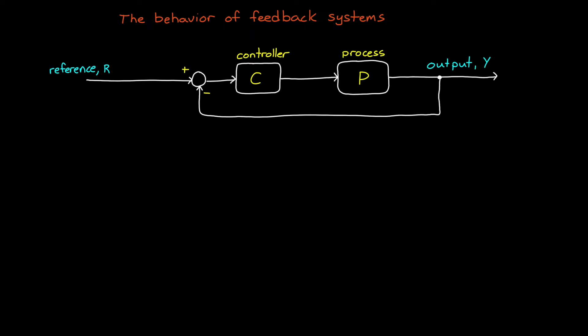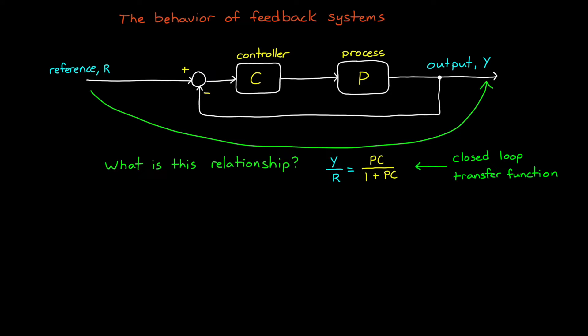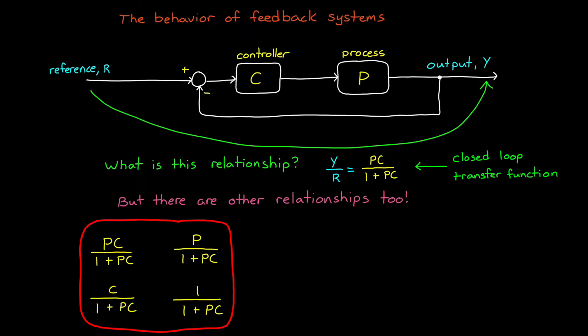When we talk about feedback systems, we can get caught up thinking solely about the relationship between the reference signal and the output. How well is the system going to follow our commands? However, if we want to fully understand how a feedback system behaves, we actually need to look at four different transfer functions.